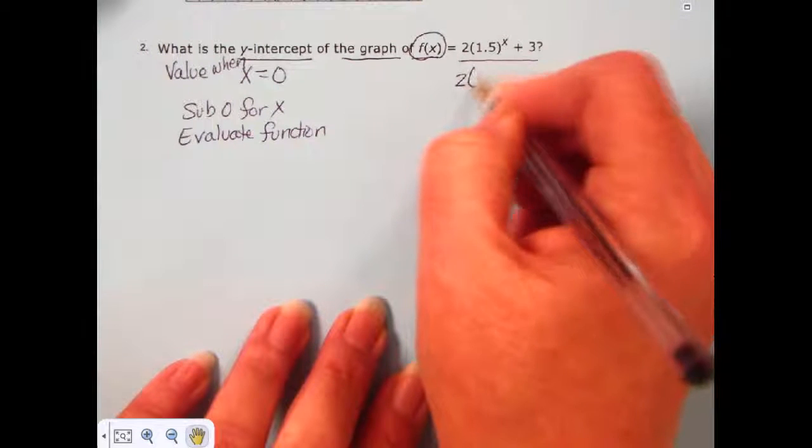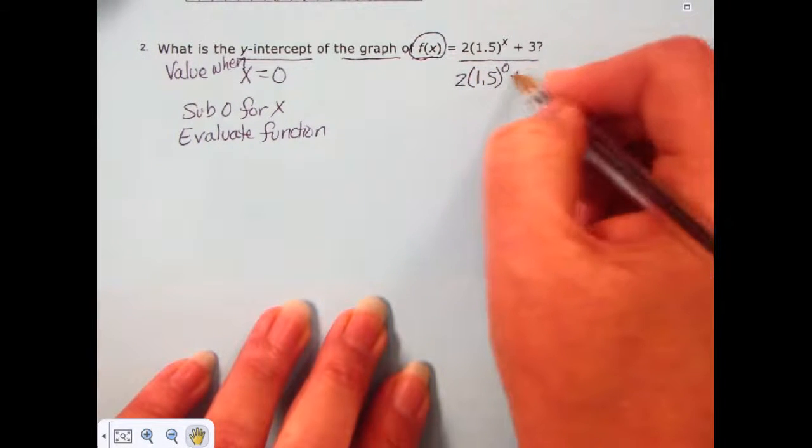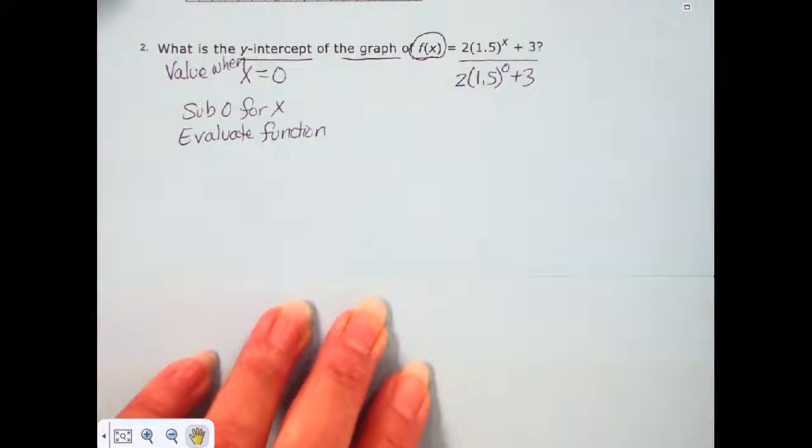So we have 2 times 1.5 to the zero power plus 3. When we evaluate that, that is going to give us the value of our y-intercept.